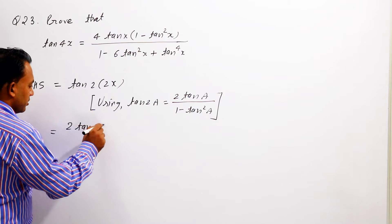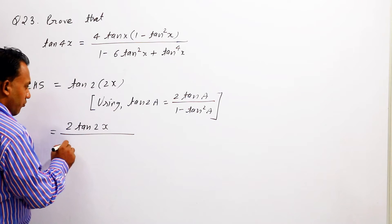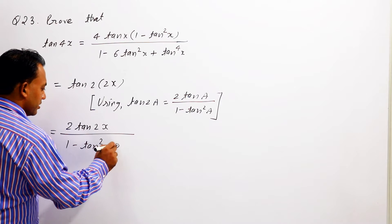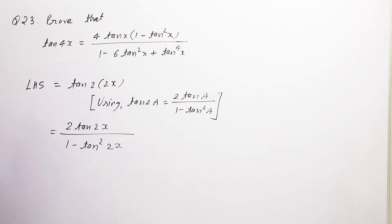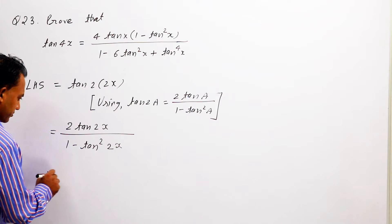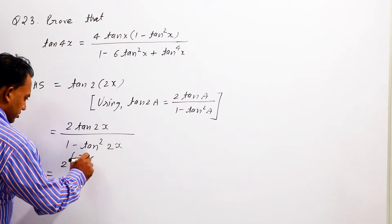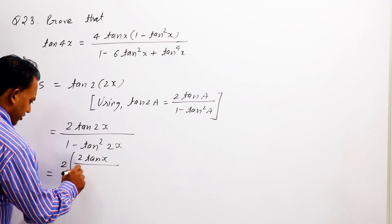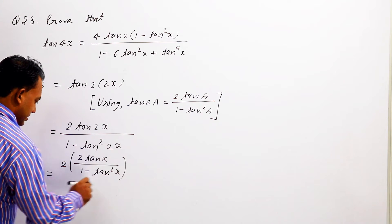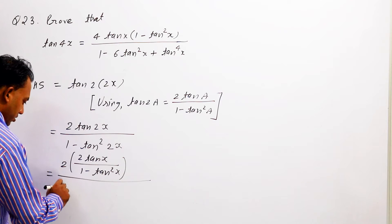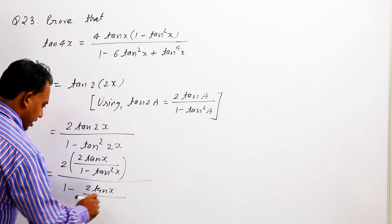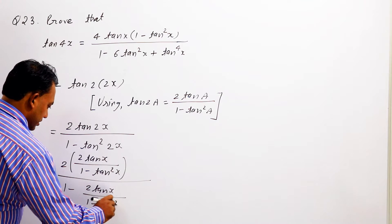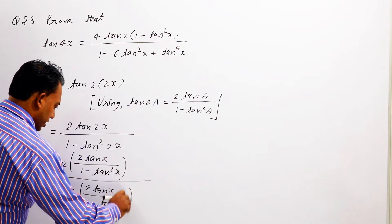तो इससे आप ऐसे लिख पाएंगे: 2 tan 2x upon 1 minus tan square 2x. Clear बच्चों? अब इसके बाद हम यही formula दुबारा use करेंगे, तो इससे ऐसे लिख पाएंगे: 2 times (2 tan x upon 1 minus tan square x) upon 1 minus (2 tan x upon 1 minus tan square x) की whole power 2.